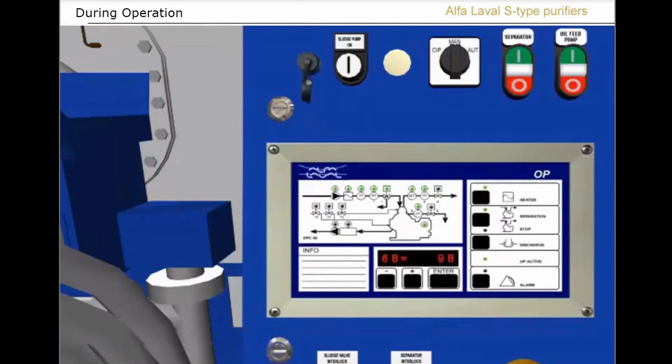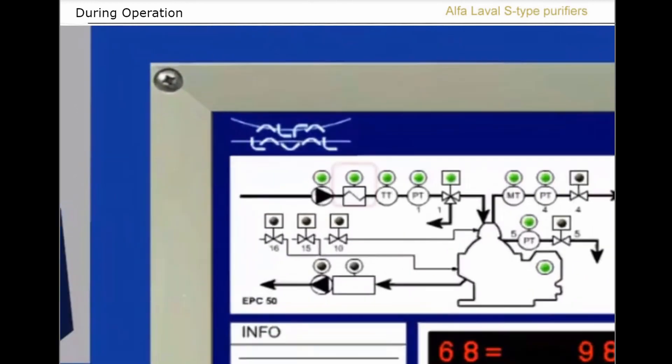During operation, observe the operator panel information. Heater operation LED lit green. Separator system operation LED lit green. Activated valve LED lit green.